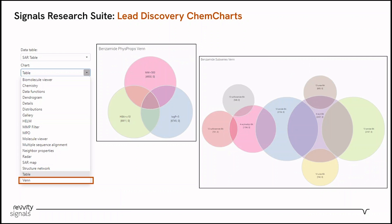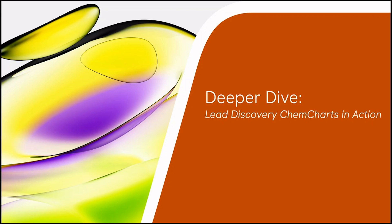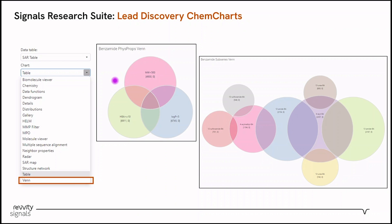The last one that I'm going to highlight for now is a Venn diagram. Just like really any of these chem charts, you can run the gamut from very simple to very complex data visualizations. Something like this diagram here is going to be a Venn diagram where each circle represents basically one of Lipinski's rules — you can see how many compounds lie in each circle and in the intersections. You can also get more creative: here, I've already defined a chemical series and a sub-series, and so each of these circles represents a certain chemotype of substituents at a given position.